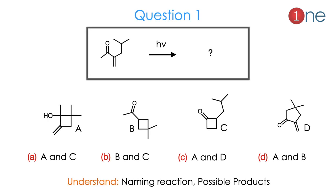Let us see question number 1. The starting material is a 6-membered linear system with a ketone, methyl, and alkene. Here you are using light. They ask you to predict the product. They give 4 choices, and among those they ask you to find which two are the plausible products. You have to understand that one named reaction is involved and you have to analyze the possible products.